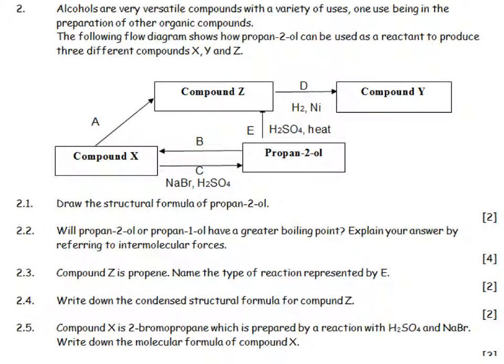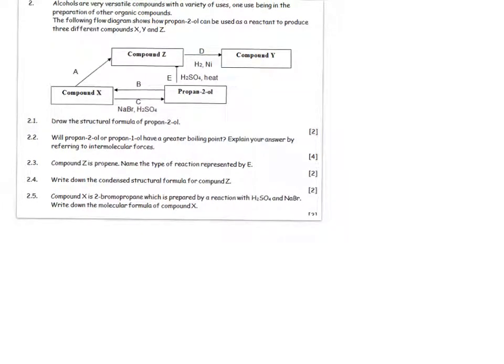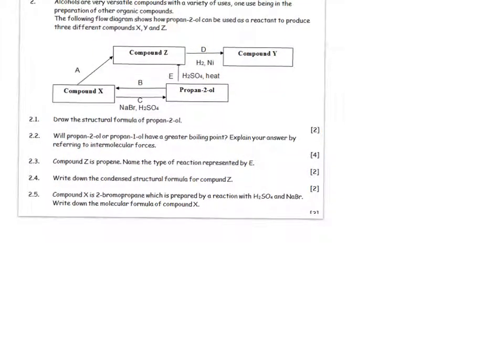Draw the structural formula of propan-2-ol. Because it's prop, we're going to land up with 3 carbons: 1, 2, 3. The alcohol group on there is propan-2-ol, so we need to put the alcohol group on the second carbon and fill up the rest with hydrogens.